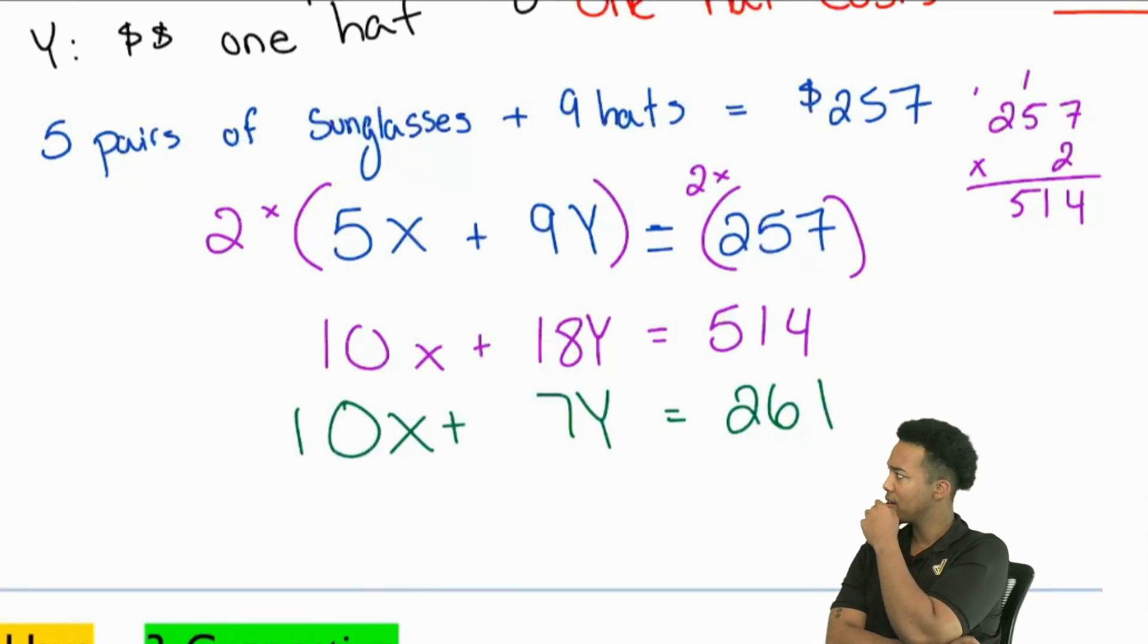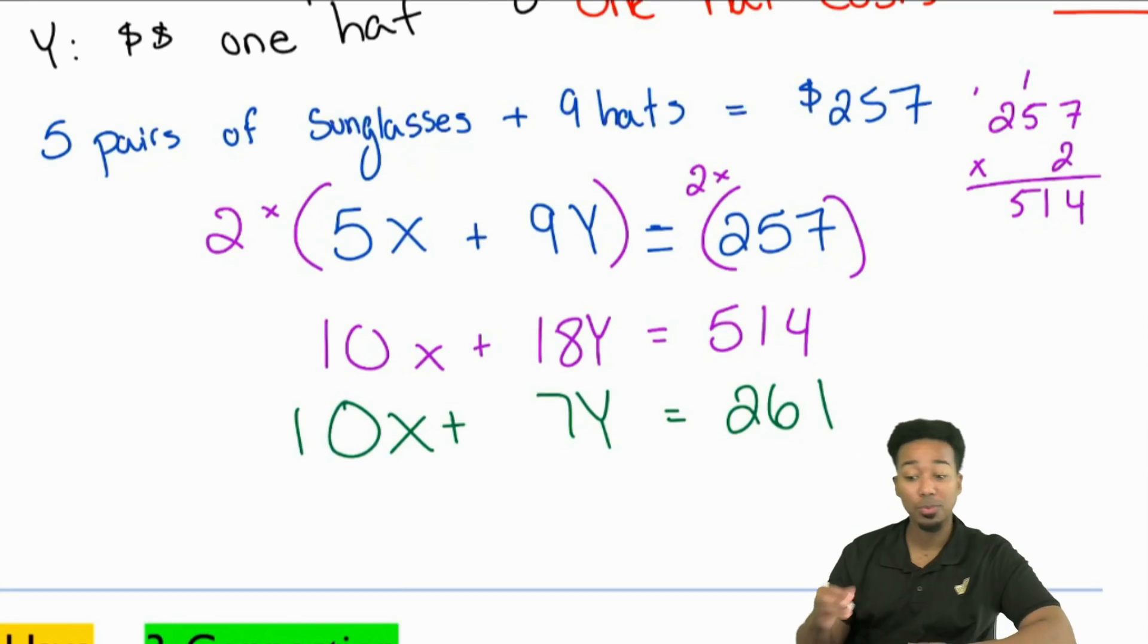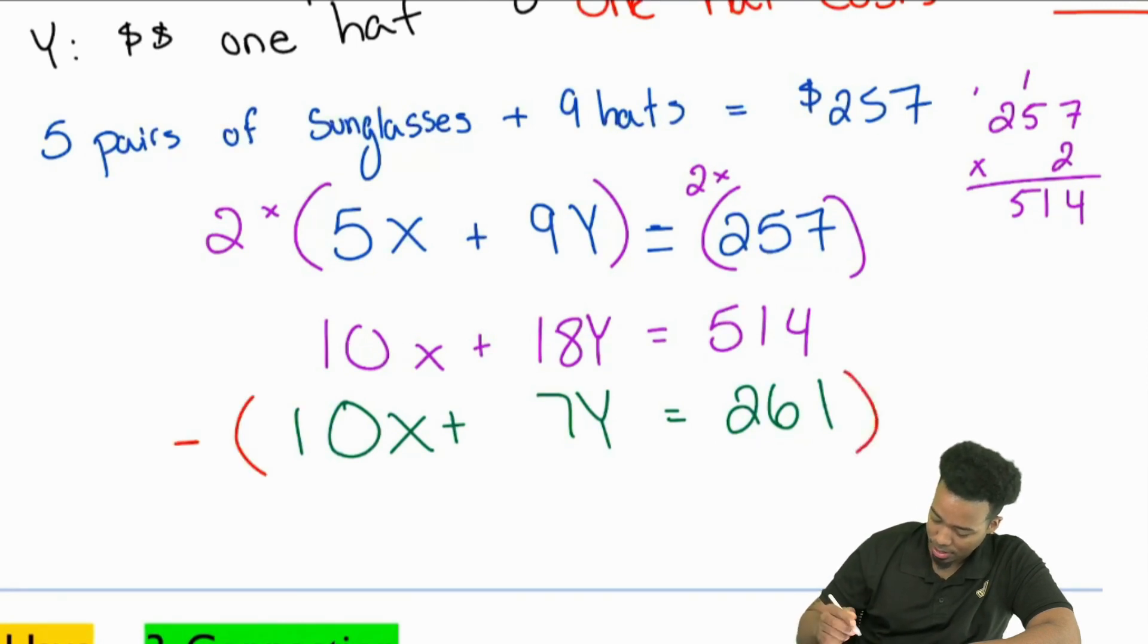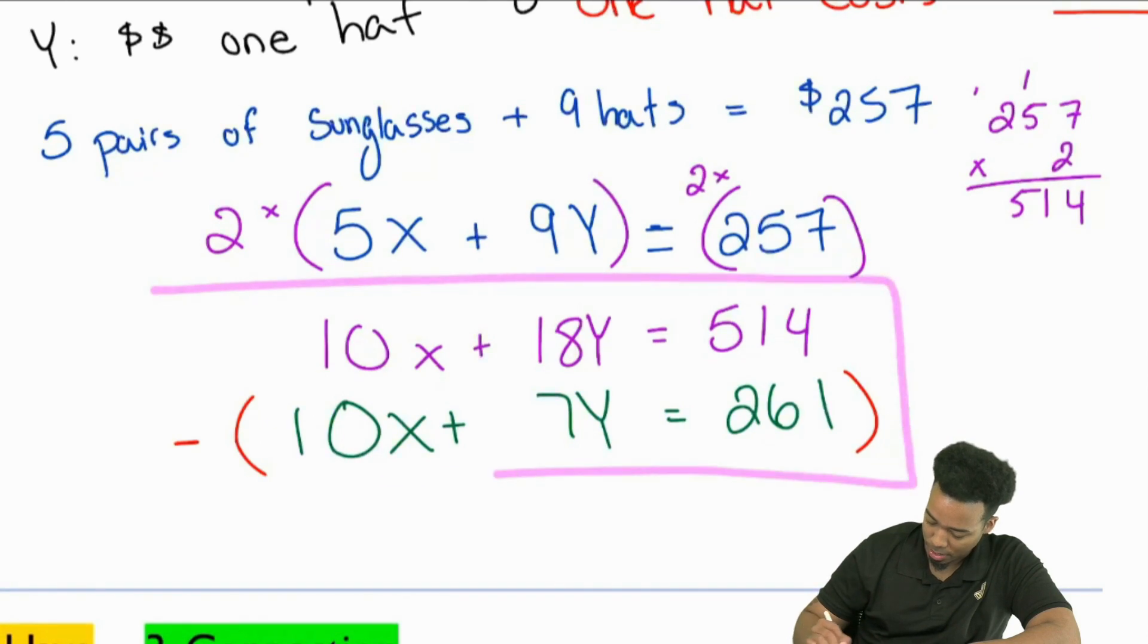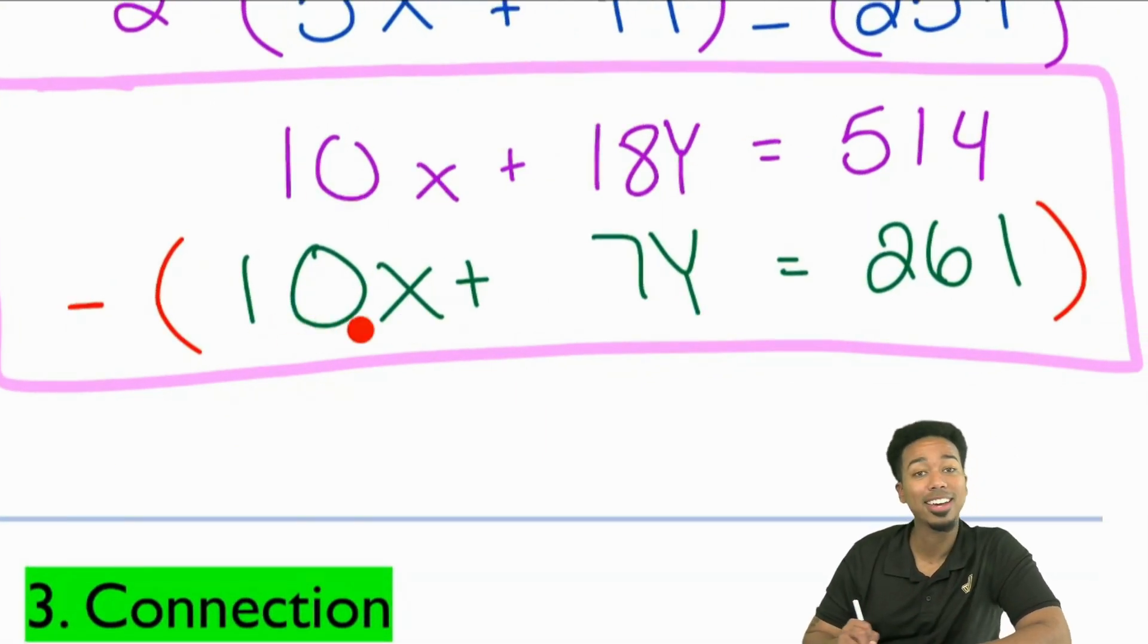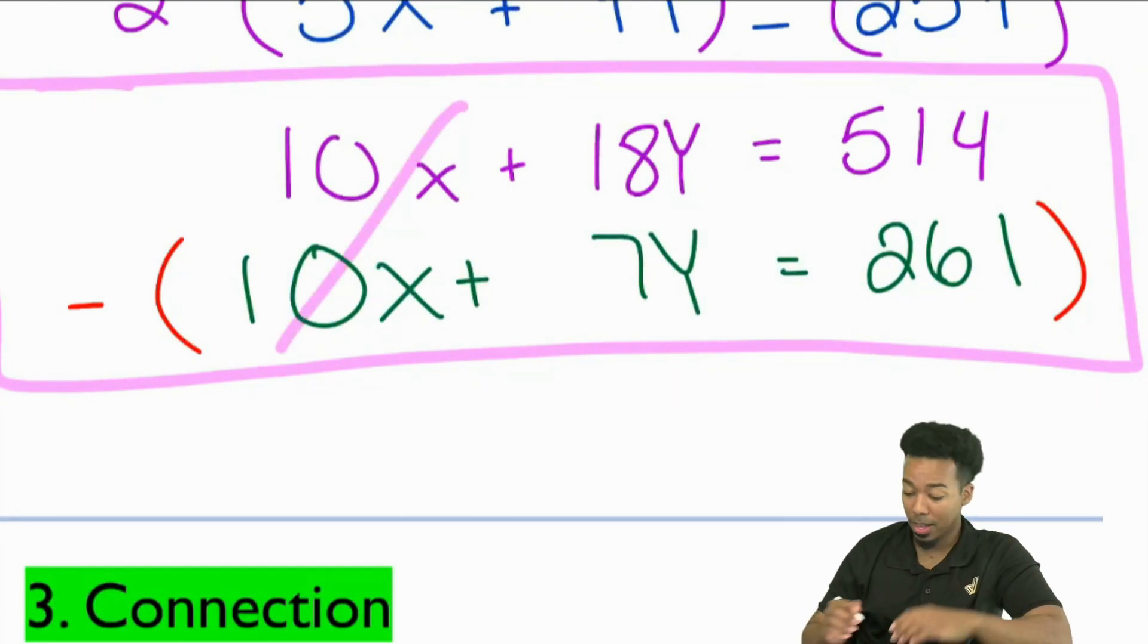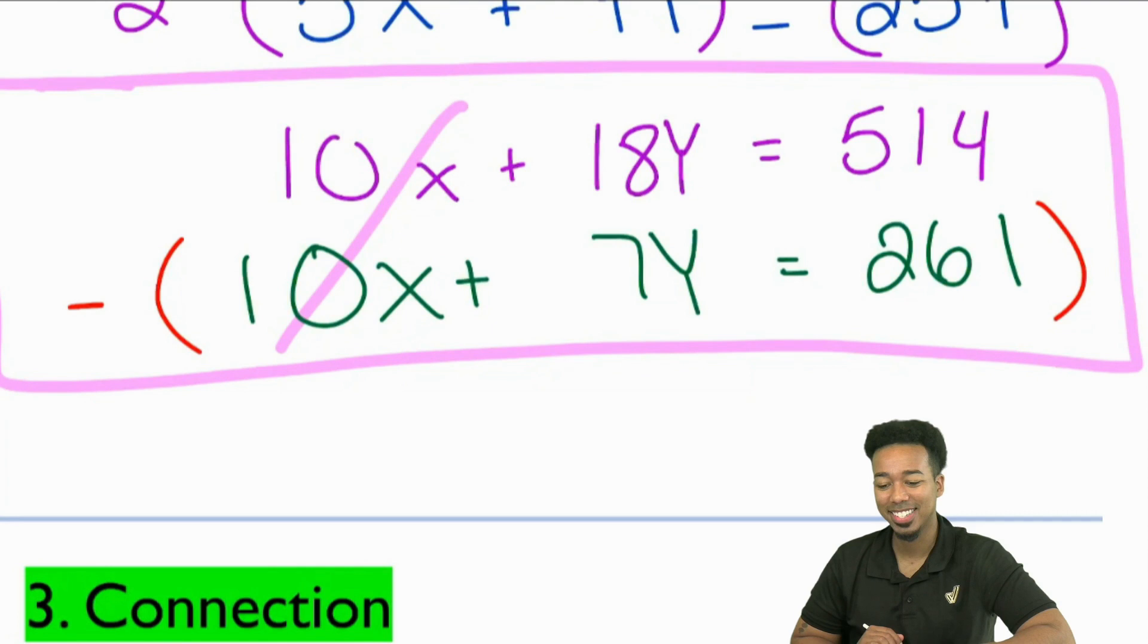Everyone, could we subtract these now? Could we? Yeah, we absolutely can. We absolutely can, and we will, because watch this. I'll use red. If I subtract these, and again, I'm only focusing on these two right here, I can subtract these now. Because when I do, everybody, what's 10X minus 10X? What's going to happen there? What happens? Exactly, Jocelyn, zero. It cancels out. So that X is gone. All right, everybody, what's 18Y minus 7Y? What's that going to be? 18Y minus 7Y, that's going to be 11Y. Thank you.